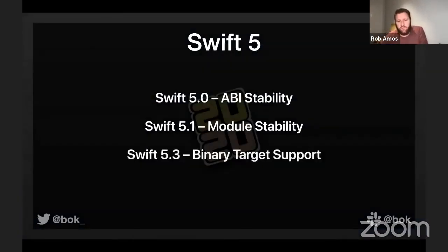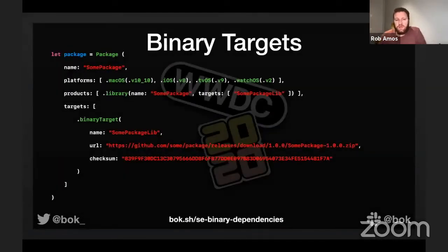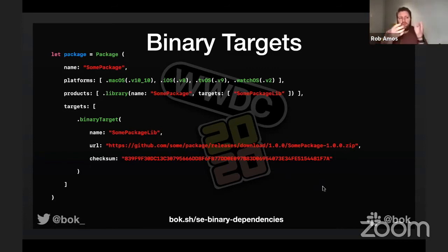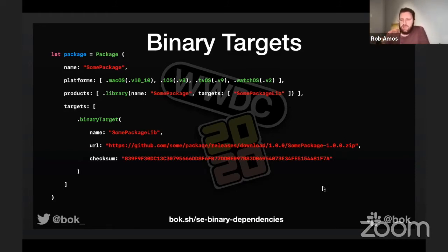This year we've already seen the Swift Evolution proposals for binary target support. In your Swift package, instead of providing the GitHub repo, you can now provide a URL to the compiled source and a checksum for safety. Swift Package Manager will go out, download it, load it up inside the Swift package itself, and present it to your Xcode projects. It takes care of all the runtime search path and framework search path problems that we've had over the years.